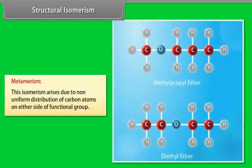Metamerism: this isomerism arises due to non-uniform distribution of carbon atoms on either side of a functional group. For example, methylpropyl ether and diethyl ether.